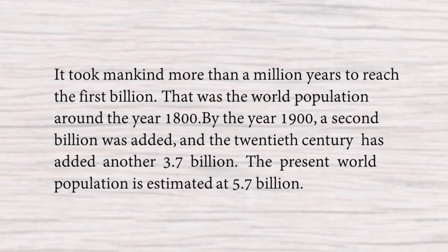We were talking about the rise in population. It took mankind more than a million years to reach the first billion. According to the narrator, it took a million years for the population to reach 1 billion — that was the world population around the year 1800. By the year 1900, a second billion was added, so the population was 2 billion.